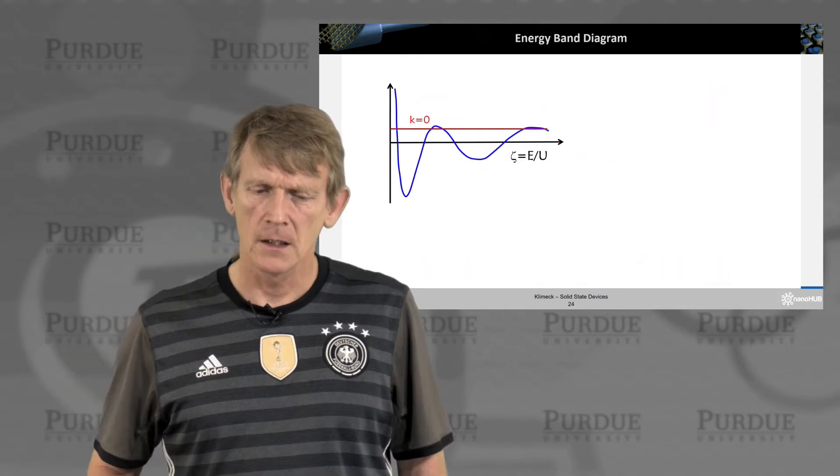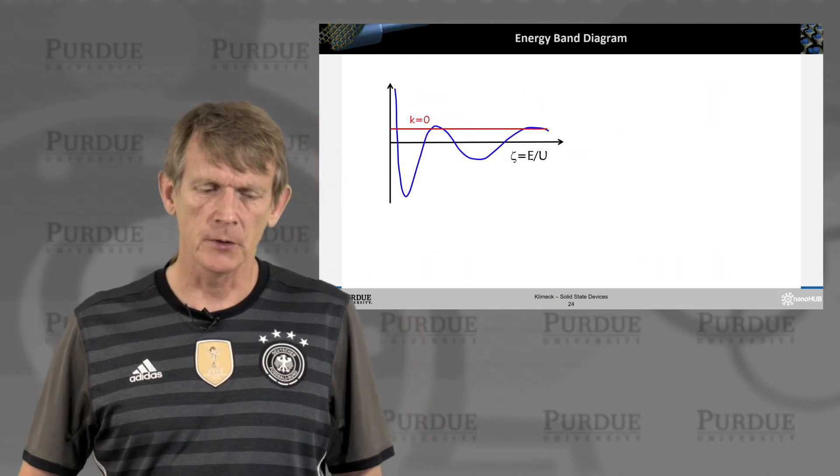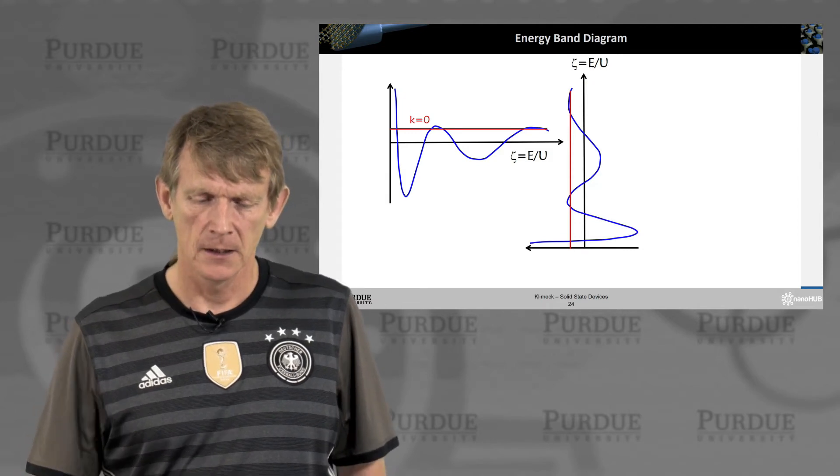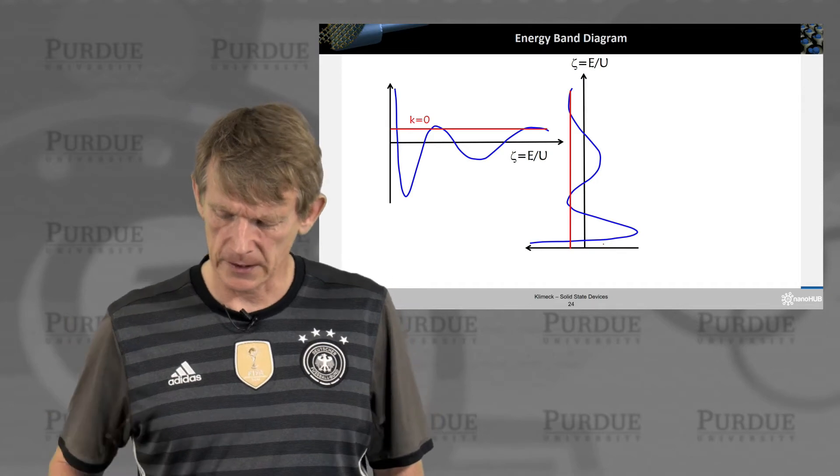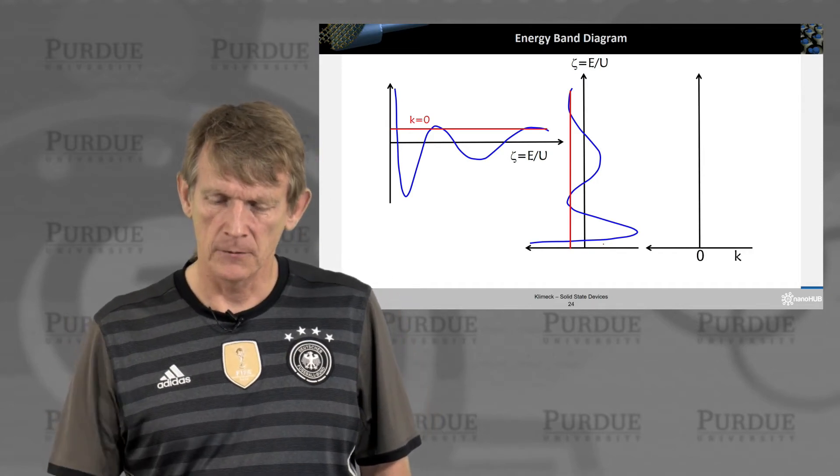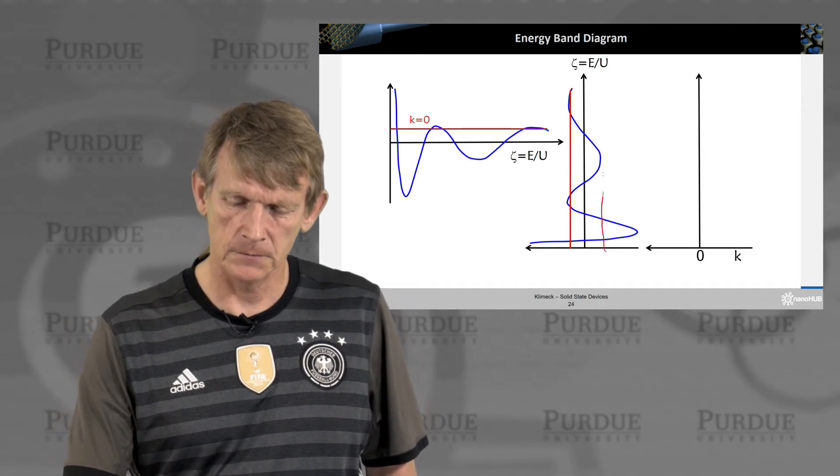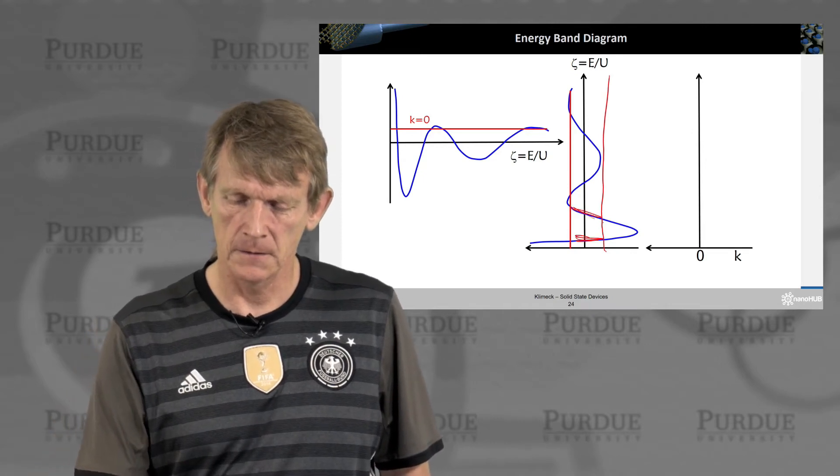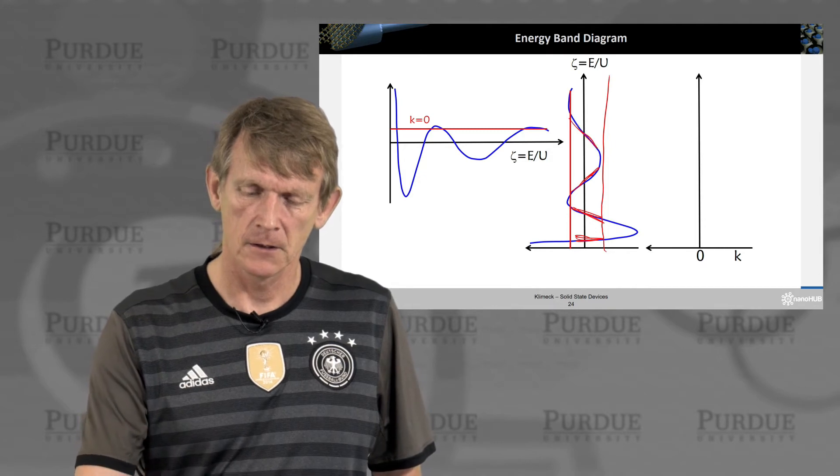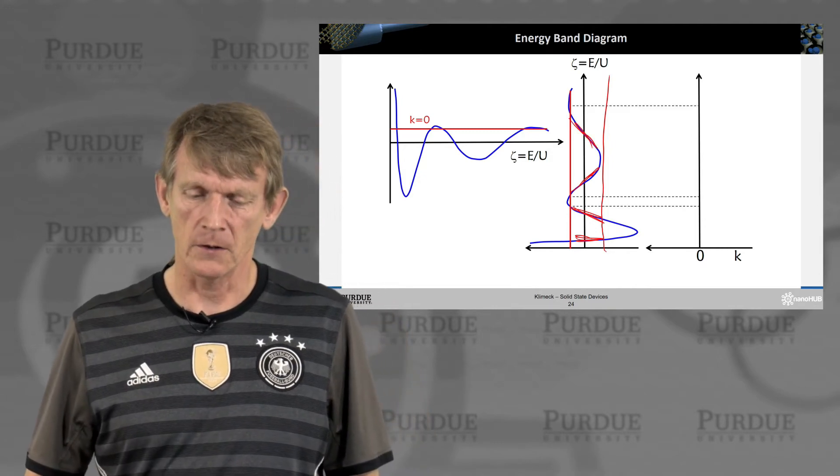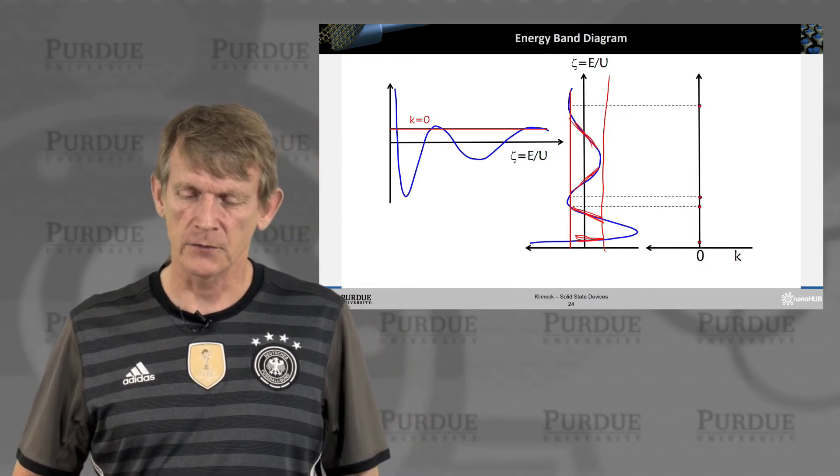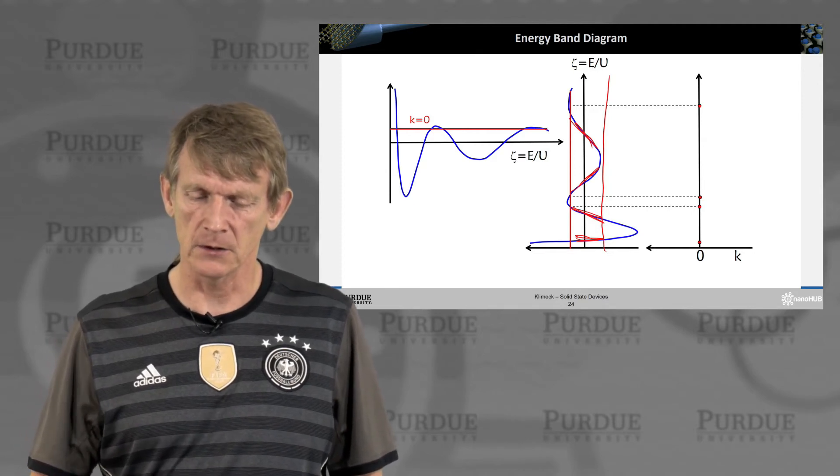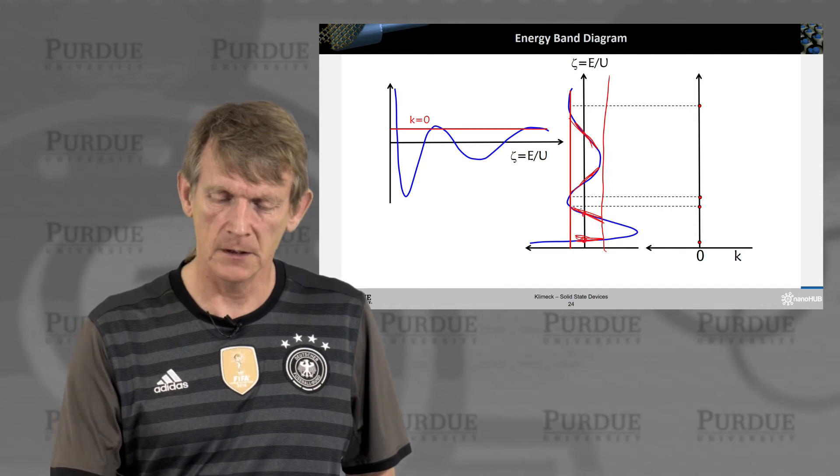So that starts to resemble something we had seen before. We'll turn this around, same figure. And we notice that for a given set of solutions, like this, you find allowed areas where electrons are allowed to occur. And we can do this for different points of k. So if we pick k equals 0, we'll look at these points here.